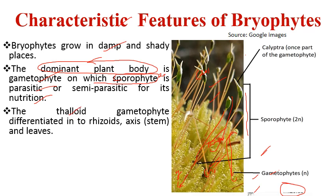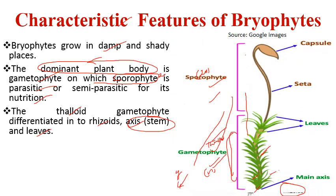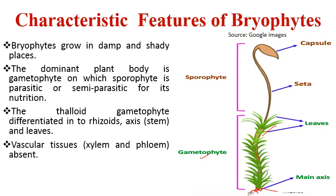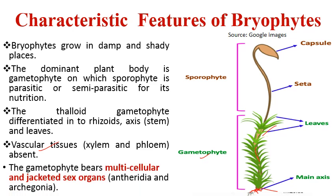The plant body is thalloid gametophyte, differentiated into rhizoids, a stem-like axis, and leaves. Vascular tissue — xylem and phloem — is absent in bryophytes. A unique feature is that the gametophyte bears multicellular and jacketed sex organs. The male sex organ is the antheridium and the female is the archegonium. They are jacketed, meaning covered by a layer of epidermis or jacket.